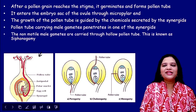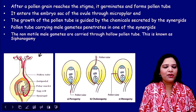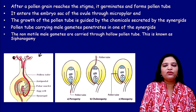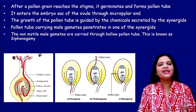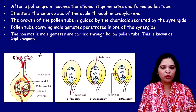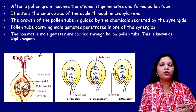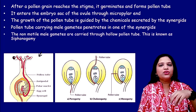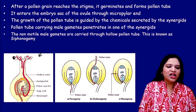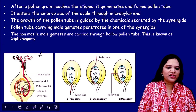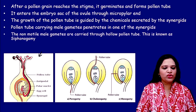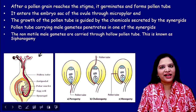Look at this structure — this is a stigma. When a compatible pollen grain falls over the stigma, it permits the pollen grain to form the pollen tube. The pollen grain forms the pollen tube, and it grows and moves towards the micropylar end.